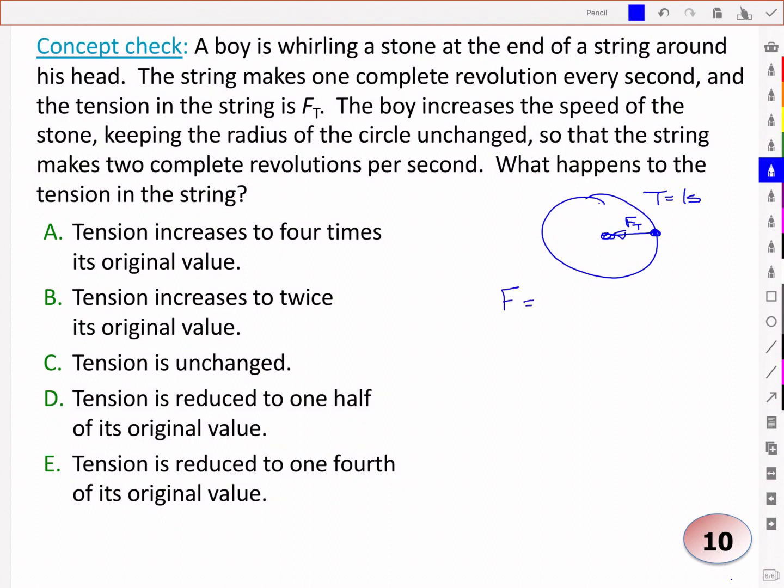So what force here is giving us our acceleration? It's just the tension. In this case, I'll call it Ft. The tension is causing a centripetal acceleration, and we know that that relates to the square of the velocity, and so if we double the velocity, we're going to quadruple the tension if we haven't changed anything else. And so the tension increases to four times its original value.